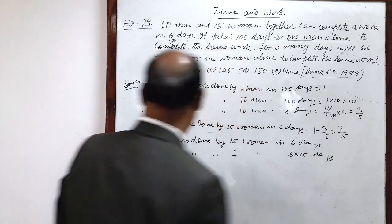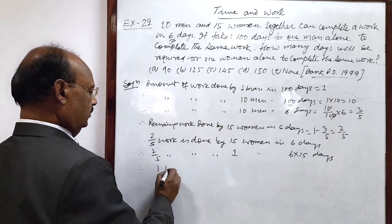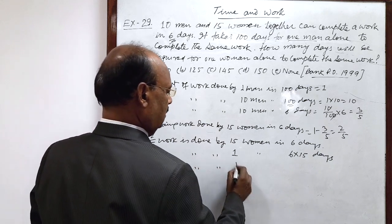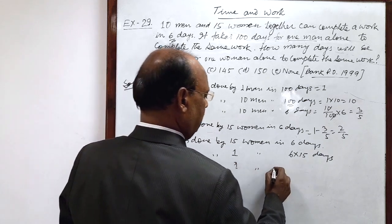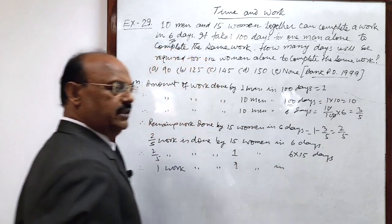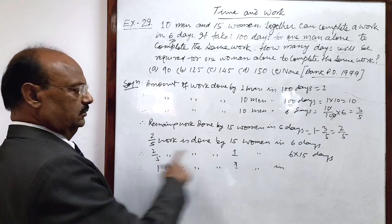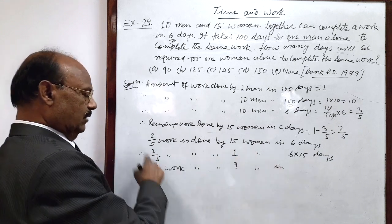So therefore 1 work is done by 1 woman in how many days? By unitary method, this much divided by 2 upon 5.